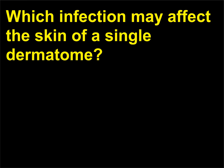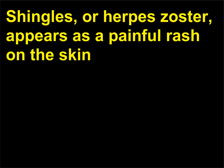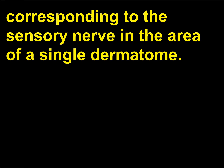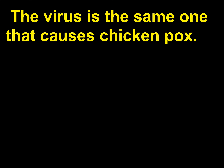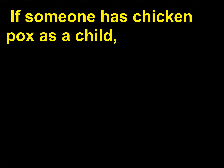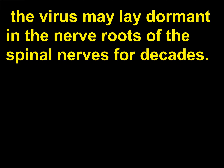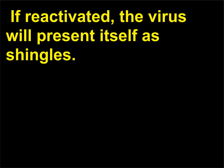Which infection may affect the skin of a single dermatome? Shingles, or herpes zoster, appears as a painful rash on the skin corresponding to the sensory nerve in the area of a single dermatome. The virus is the same one that causes chicken pox. If someone has chicken pox as a child, the virus may lay dormant in the nerve roots of the spinal nerves for decades. If reactivated, the virus will present itself as shingles.